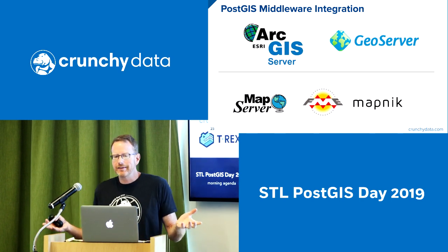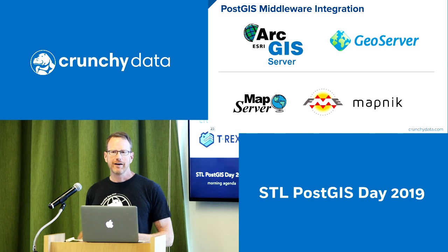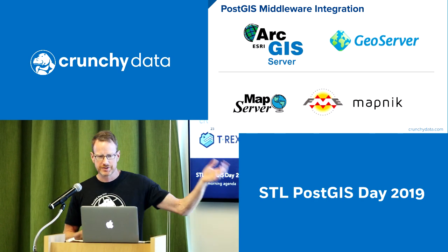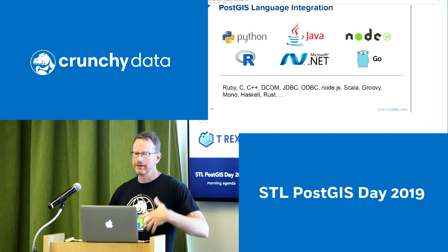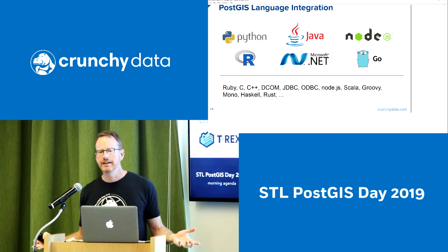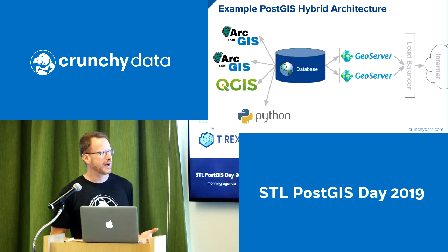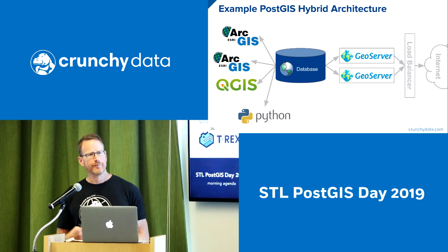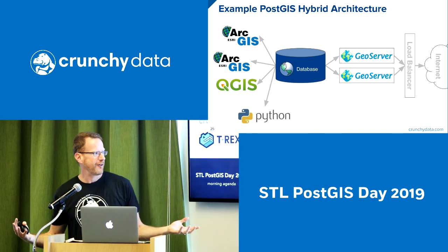For middleware when you're building web apps, all the middleware talks to PostGIS. Most common proprietary one: ArcGIS. Most common open source ones: GeoServer, MapServer, Tegola, Mapnik — all these middlewares for building web apps speak to PostGIS natively. MapServer was the very first web server to talk to PostGIS. For language integration, every language in use today has a high-performance direct connection to Postgres and understands spatial types. Having that level of integration with third-party products allows you to build hybrid architectures — QGIS and ArcGIS don't have obvious integration points, but if you stick them against the same database, they are ipso facto integrated.